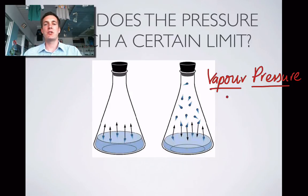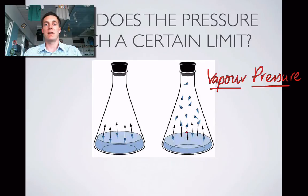This vapor pressure depends on the temperature and the nature of the liquid, because the forces between particles will play a role, so the nature of the liquid is important. How much energy the particles have — in other words how many can evaporate — will also play a role, so the temperature is going to be important. We call this pressure above the liquid its vapor pressure, and it depends on the temperature and the liquid itself.